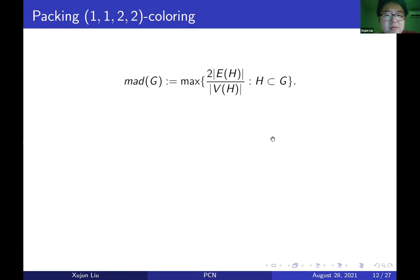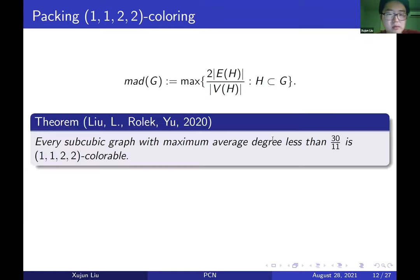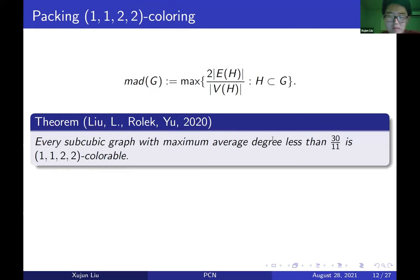The maximum average degree of G is defined as the maximum of 2|E(H)|/|V(H)| over all subgraphs H of G. We showed with Liu, Rolek, and Yu that every subcubic graph with maximum average degree less than 30/11 is packing 1-1-2-2 colorable.